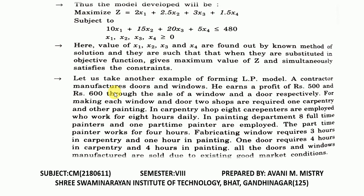Let us take another example of forming a linear programming model. A contractor manufactures doors and windows. He earns a profit of 500 and 600 through the sale of a window and a door respectively. For making each window and door, two shops are required: one carpentry and one painting. In the carpentry shop, 8 carpenters are employed who work for 8 hours daily. In the painting department, 8 full-time painters and one part-time painter are employed; the part-time painter works for 4 hours. Fabricating a window requires 3 hours in carpentry and 1 hour in painting. One door requires 4 hours in carpentry and 4 hours in painting.